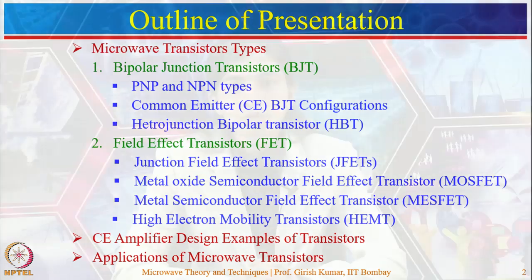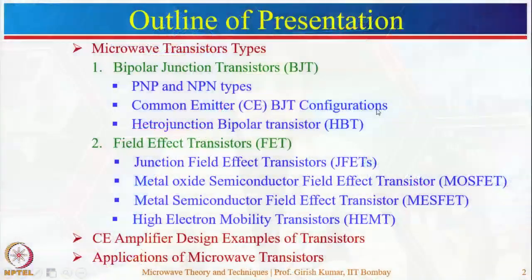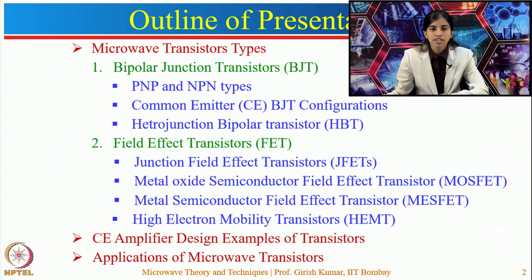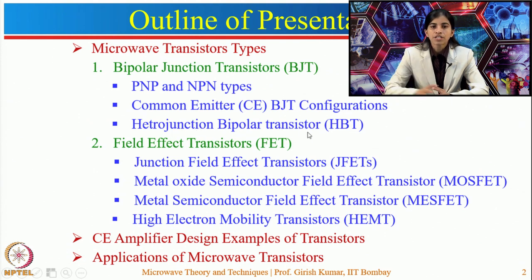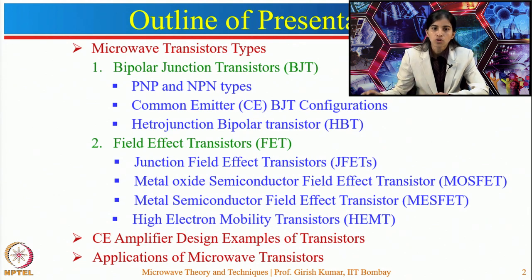The most commonly used configuration is the common emitter bipolar junction transistor configuration. These transistors do not provide desirable characteristics at higher frequencies due to their high base resistance, which limits the transition frequency. A new type, known as the heterojunction bipolar transistor, utilizes different semiconductor materials to form the emitter and base junction, providing low base resistance so they can operate up to very high frequency ranges.